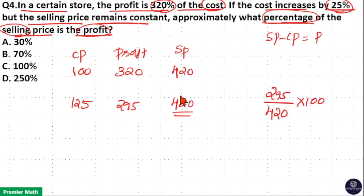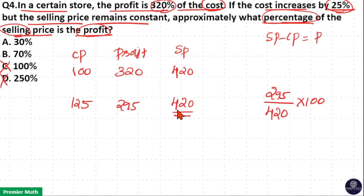Here, 100% of 420 is 420, which means option C is not the answer. Option D is also not the answer because 295 is less than 420. Now, 50% of 420 is equal to half of 420, that is 210. So option A is not the answer. Therefore, option B is your answer.